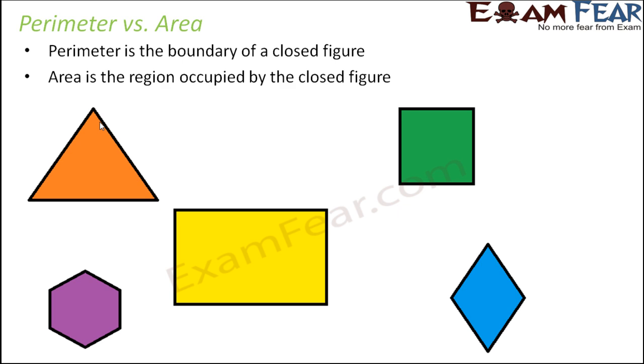Whereas when we talk about area, it is the region occupied by the closed figure. In all of these images, the colored portion represents the area. For example, the orange colored portion represents the area of the triangle. The yellow colored region represents the area of this rectangle. The green region is the area of the square and so on. So that is how we differentiate between perimeter and area.